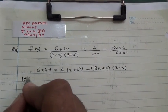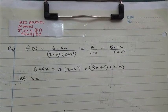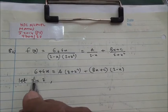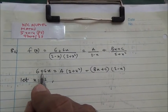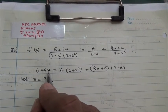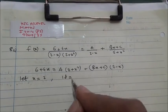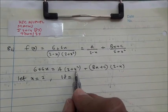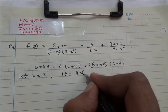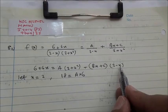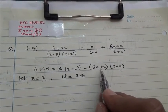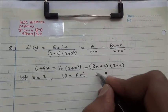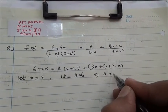From here, we can let x equal to 2. So 6 plus 6 times 2 gives 6 plus 12 equals 18. We have 18 equal to a times 2 plus 2 squared, which is 4 plus 2 equals 6, so a times 6. And 2 minus 2 is 0, so that term disappears. Therefore, 6a equals 18, and a equals 18 divided by 6, which is 3.